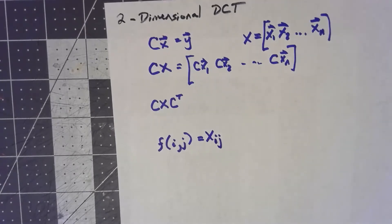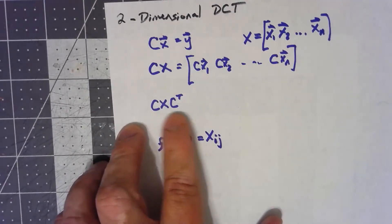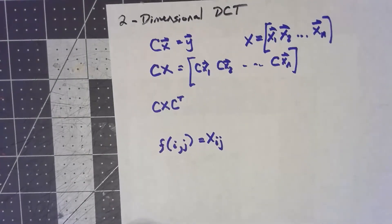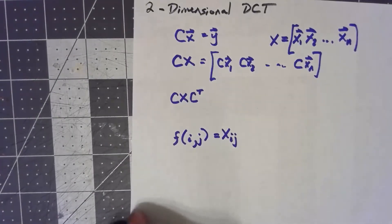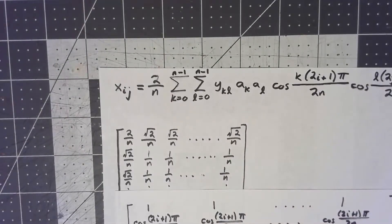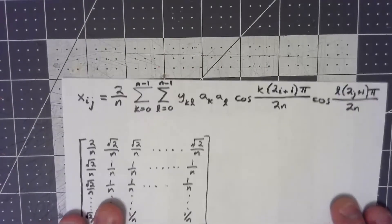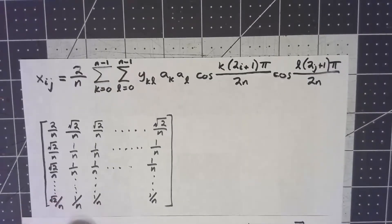Well, it just kind of comes a matter of tracing through some matrix multiplication stuff, but we do get a fairly complicated formula here. We get that x_ij is 2 over n times this double summation y_kl a_k a_l cosine of all this stuff. In my mind, it's hard to trace through this whole summation thing and see what's going on.